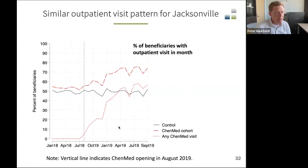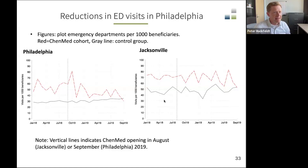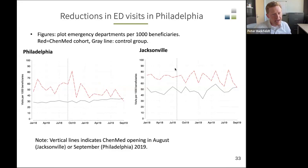Looking at Jacksonville, we see a similar pattern. The control group had a constant percentage of outpatient visits before and after the opening of the ChenMed clinic, but there was an increase for the ChenMed cohort after the clinic opening. We then wondered: did this apply to emergency department visits? In Philadelphia, the control group was pretty constant in the probability of an ED visit, and the ChenMed cohort showed a relative reduction in ED visits after the opening of ChenMed. In Jacksonville, it seemed like the percentages showed less of a relative reduction in ED visits for those patients.